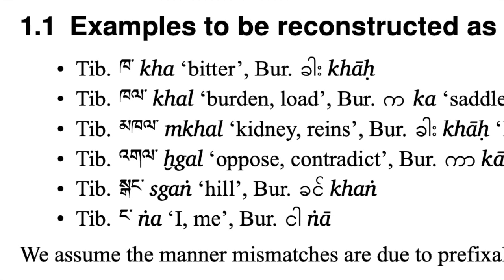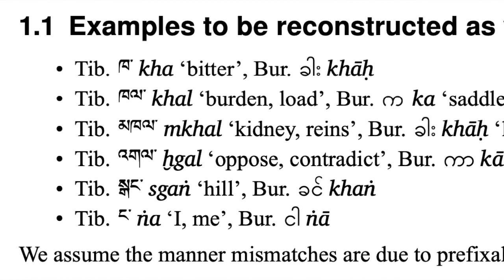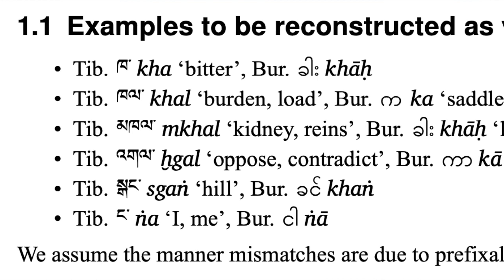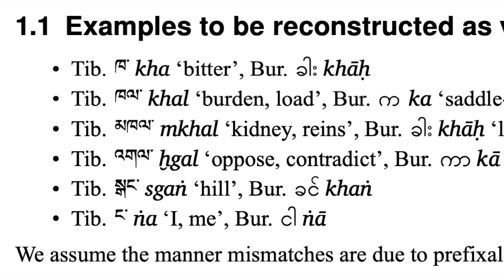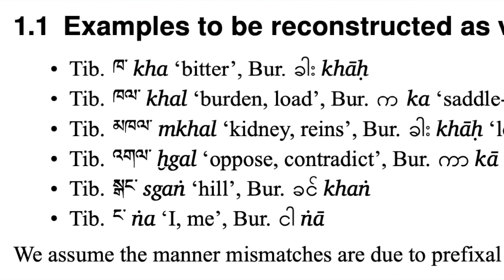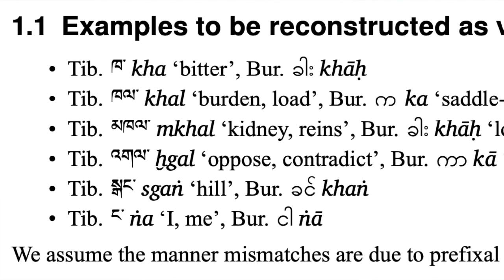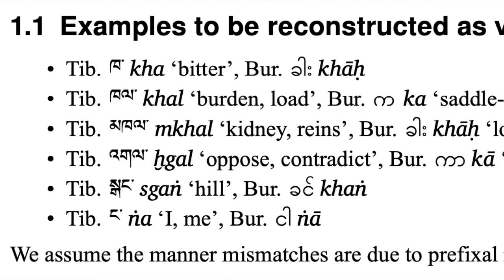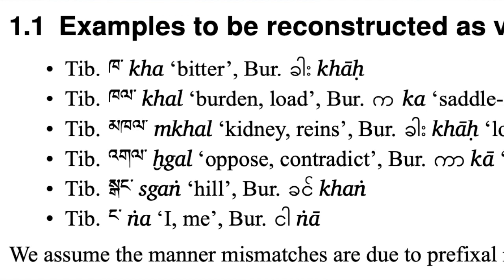In the word for 'hill,' Tibetan has a voiced initial and Burmese has an aspirate, which probably goes back to a voiceless, so there's still work to be done. You can tell stories like: the voicelessness is conditioned by an s-prefix. But it's a mess one way or another — manner of correspondence in Sino-Tibetan is messy. There's a big chunk of my 2019 book that lays out that mess, because so much of the morphology in the proto-language and daughter languages is in the prefix.